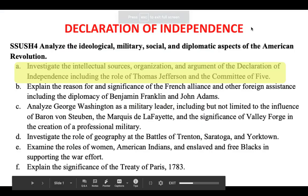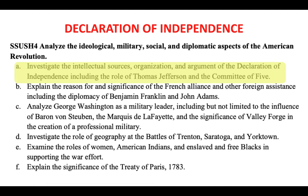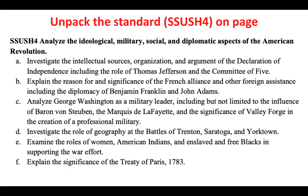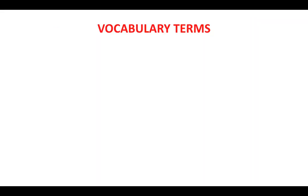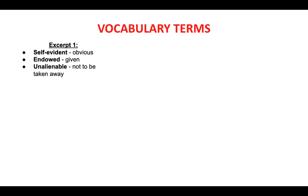We're on Standard 4, looking at section 4a: investigate the intellectual sources, organization, and argument of the Declaration of Independence, including the role of Thomas Jefferson and the Committee of Five. We're on slide 41. Here are some vocabulary terms I want you to know for each excerpt.